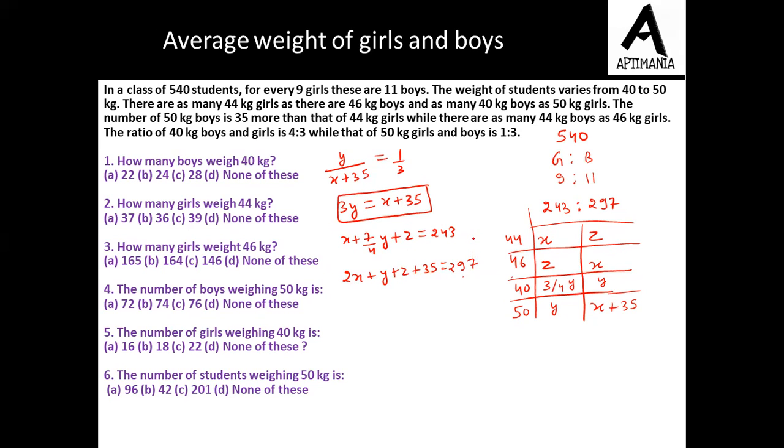We will get x minus 7 by 4 of y minus 3 by 4 of y, which is minus 3 by 4 of y. That cancels out to 35 only. And 297 minus 243 is 54. On further solving, we will get x minus 3 by 4 of y equals 19.